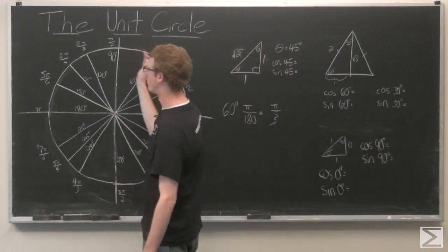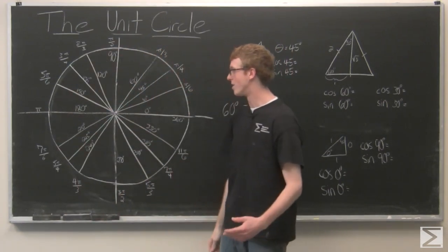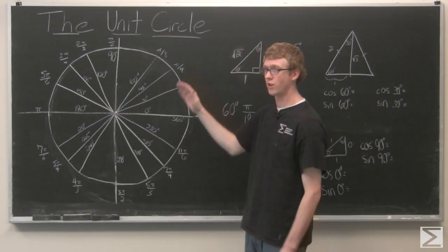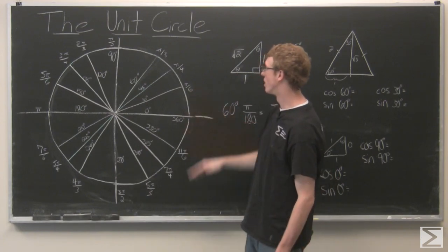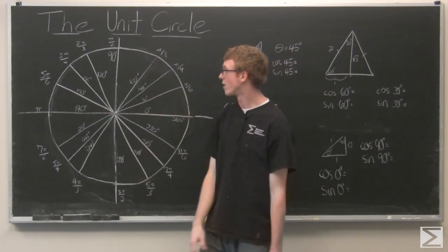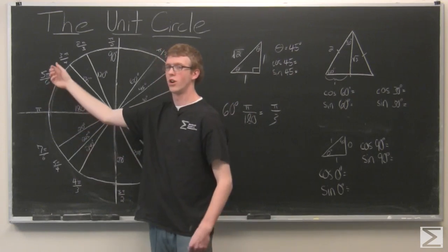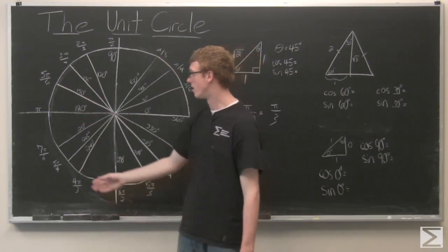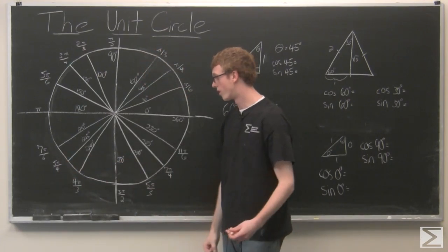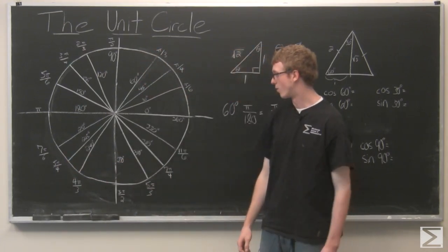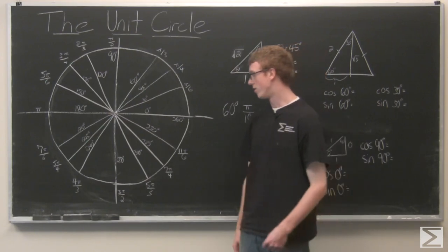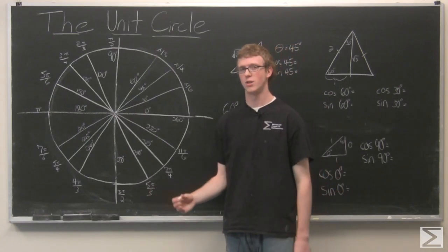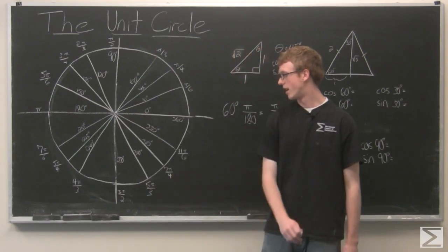So we can go around the whole entire circle and measure out the angles. Notice in the first quadrant all the numerators are 1. In the second quadrant all the numerators are 1 less than the denominator. In the third quadrant all the numerators are 1 more than the denominator. And in the fourth quadrant all the numerators are 1 less than twice the denominator. So that's just a good way to remember the values.